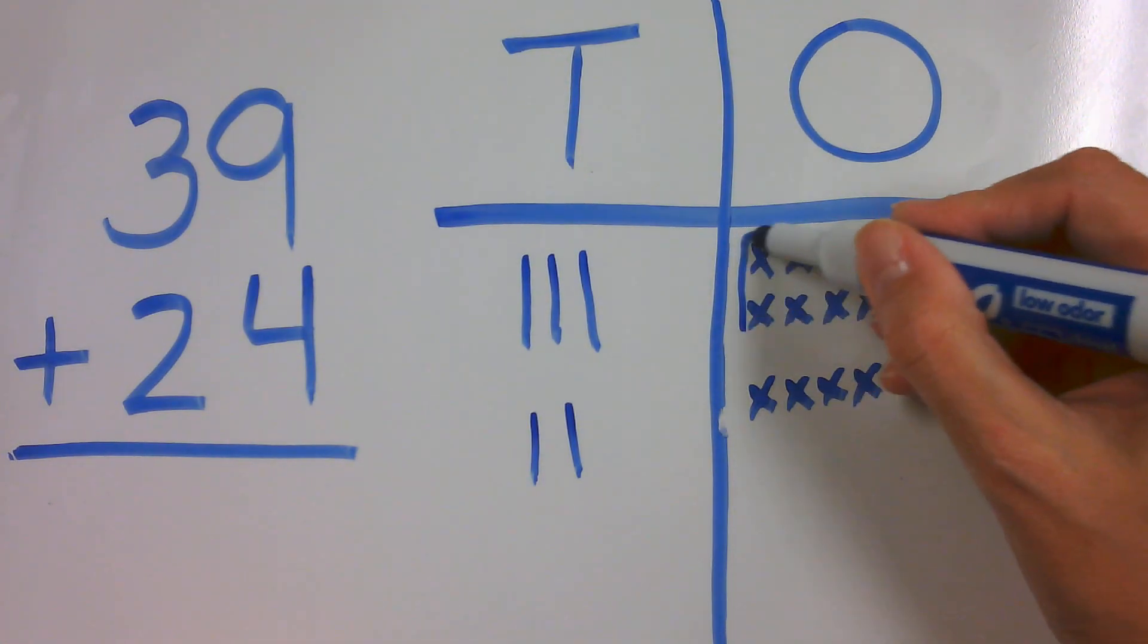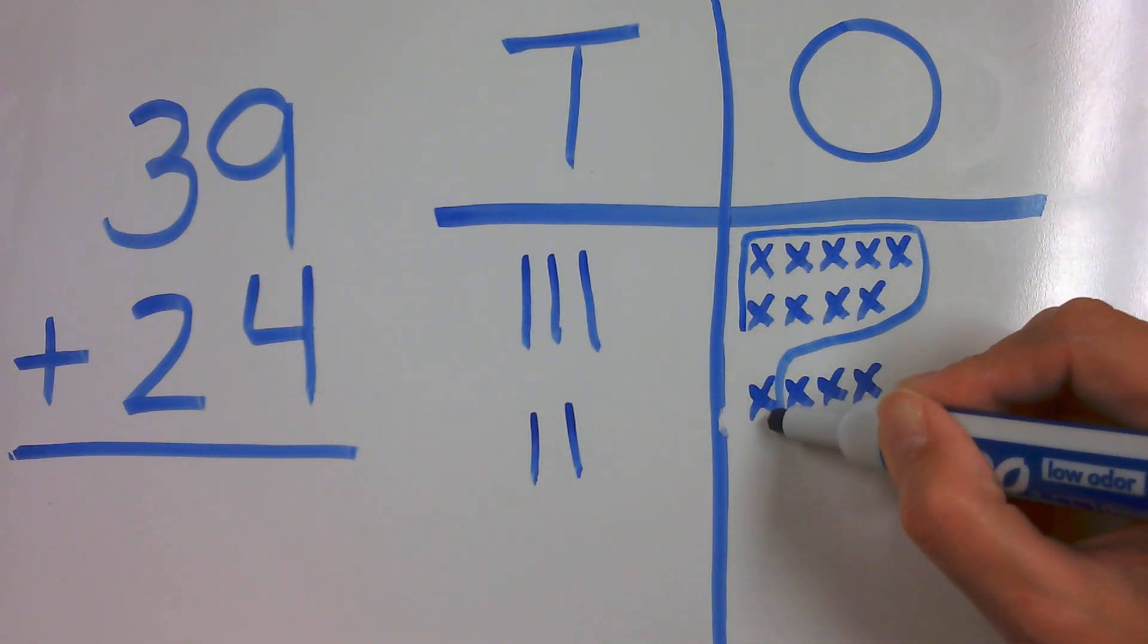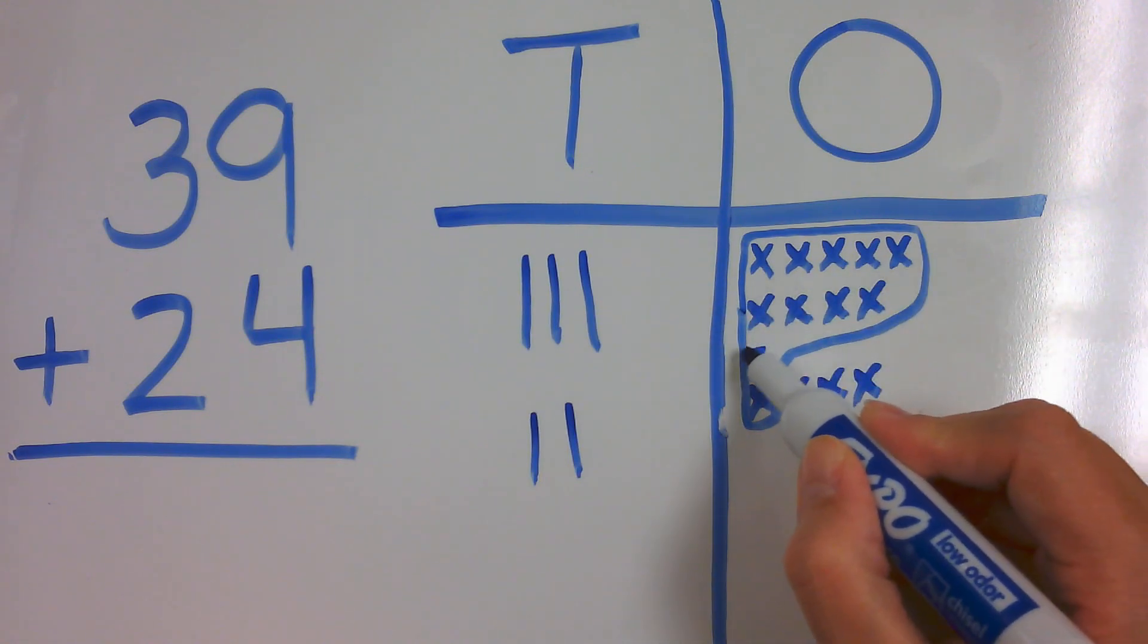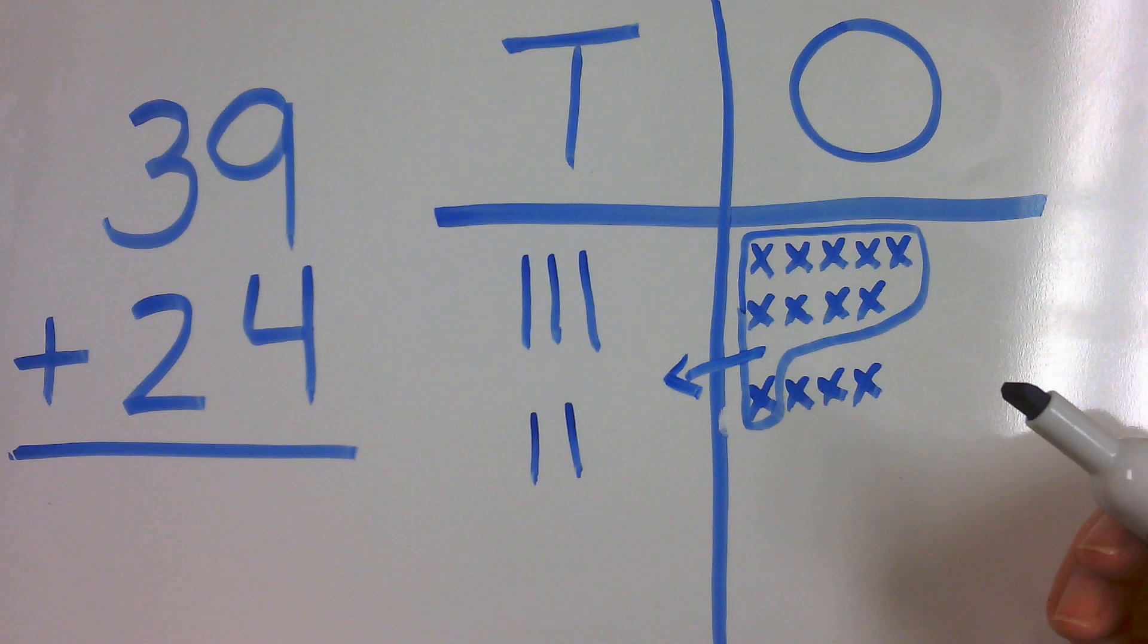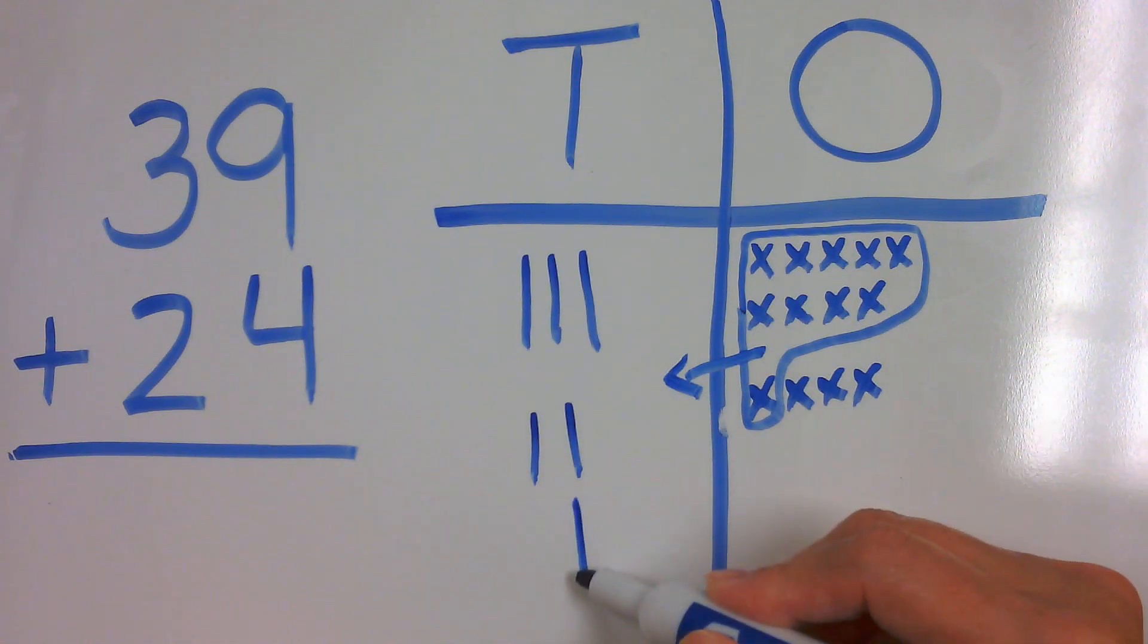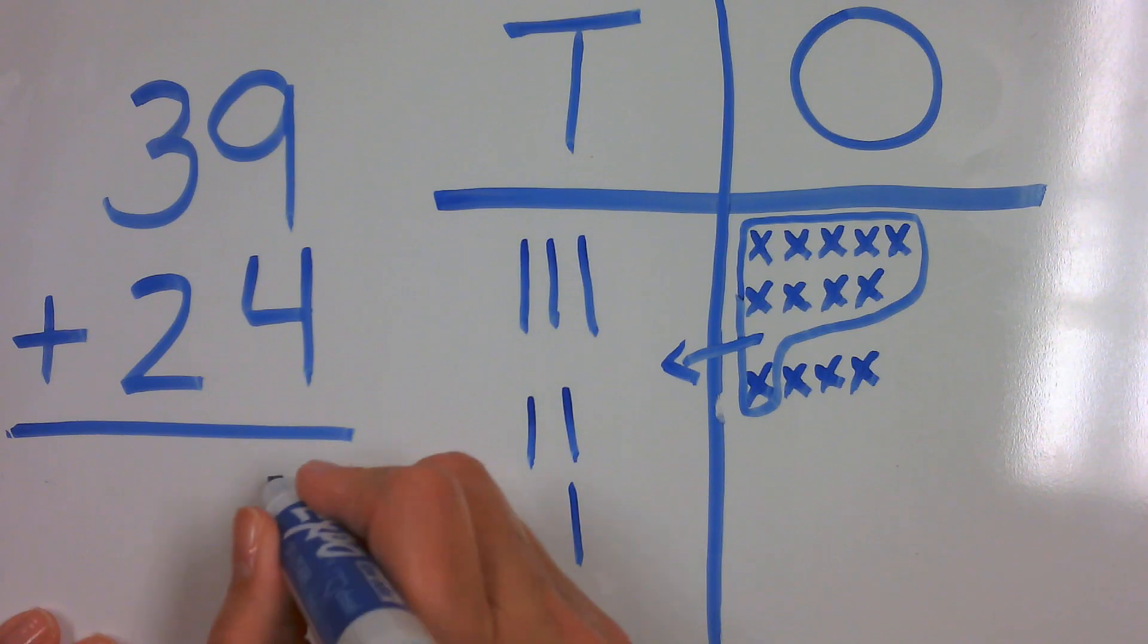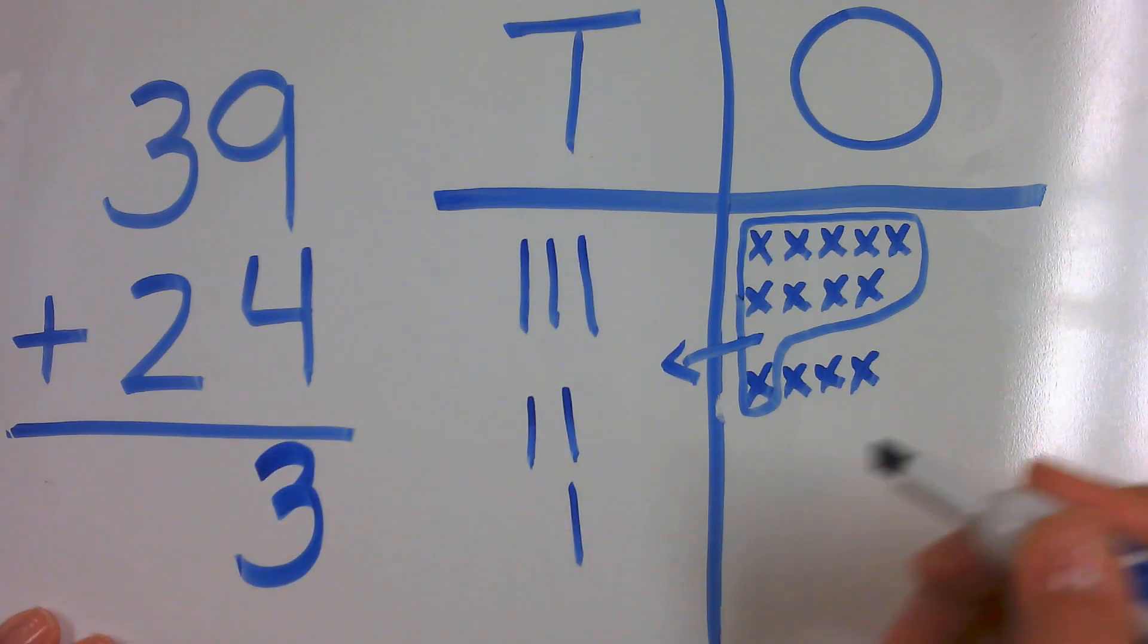So I am going to circle that nine plus one more gave me a ten. So I'm going to move my ten over and put that ten here. Now I'm still left with a few ones. So how many ones do I have? I have three ones. So I'm going to place three in my ones column.